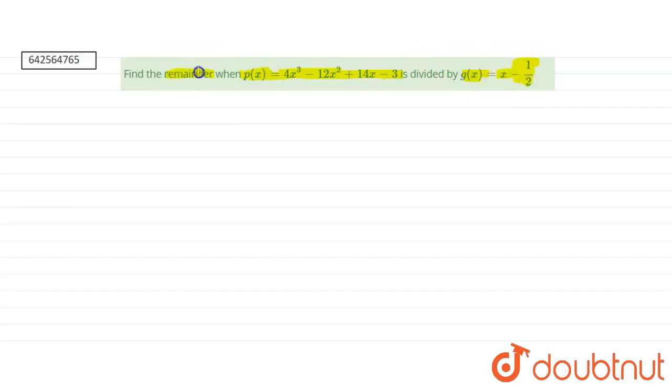So we have to find the remainder. We have our P of X. Let us take P of X. Given P of X is equals to 4X cubed minus 12X squared plus 14X minus 3 and we are given that it is divided by G of X. G of X is equals to X minus 1 by 2.